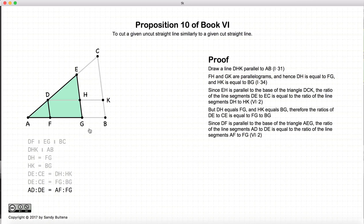Now let's look at this other triangle AEG and line DF. DF is parallel to the base EG. So again, from Proposition 2 of this book, the ratio of AD to DE will be equal to the ratio of AF to FG.